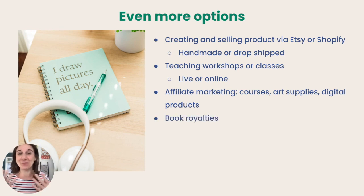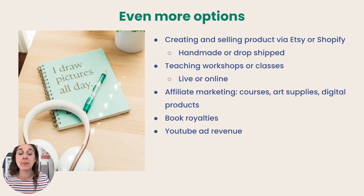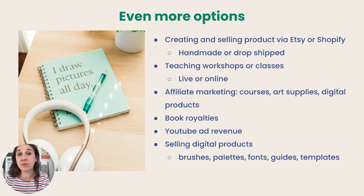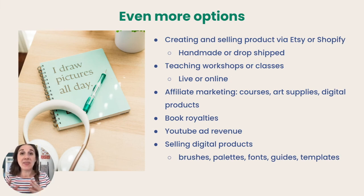If you want to write or illustrate a book, you could get book royalties. You could get YouTube ad revenue if you do tutorials and run ads. You could sell digital products — Procreate brushes, Illustrator brushes, palettes, fonts, guides, templates, or clip art — anything digital that can be uploaded and downloaded by customers.